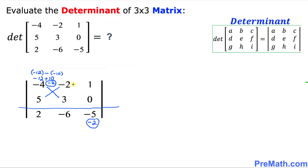Let's do the next pair. We are going to crisscross the next pair over here. Negative 2 times 0 is going to be 0. Put a minus sign again. 1 times 3 is 3. So 0 minus 3 is negative 3. This negative 3 goes in the opposite direction.